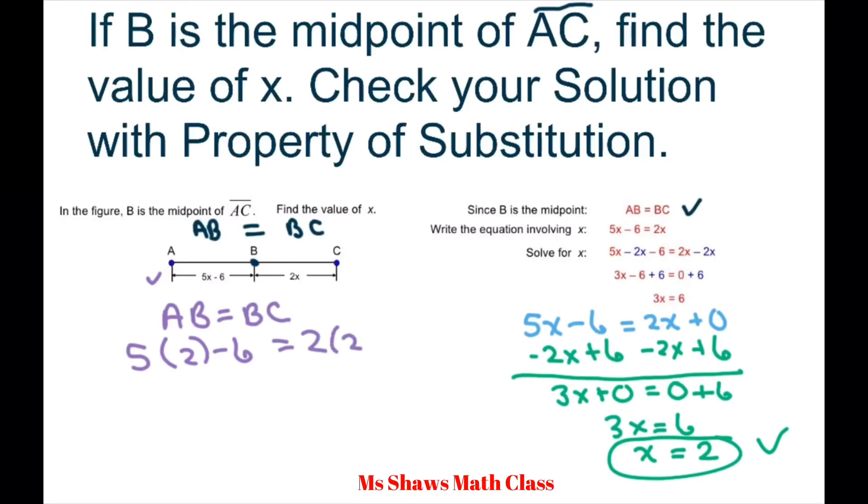So that's substitution. We have 10 minus 6 equals 4, or 4 equals 4. That means AB is 4 and so is BC. That means the length of AC equals 4 plus 4, which equals 8.